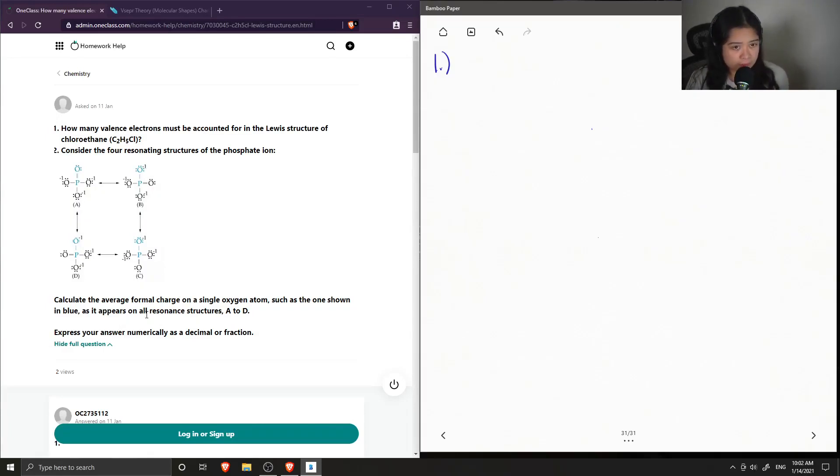Okay, so let's do the first part of this question. I'll just call it part A. We just need to draw the Lewis structure of chloroethane, which is C2H5Cl. They ask for how many valence electrons, so luckily we need to know the number of valence electrons to write the Lewis structure. So we can calculate it right now.